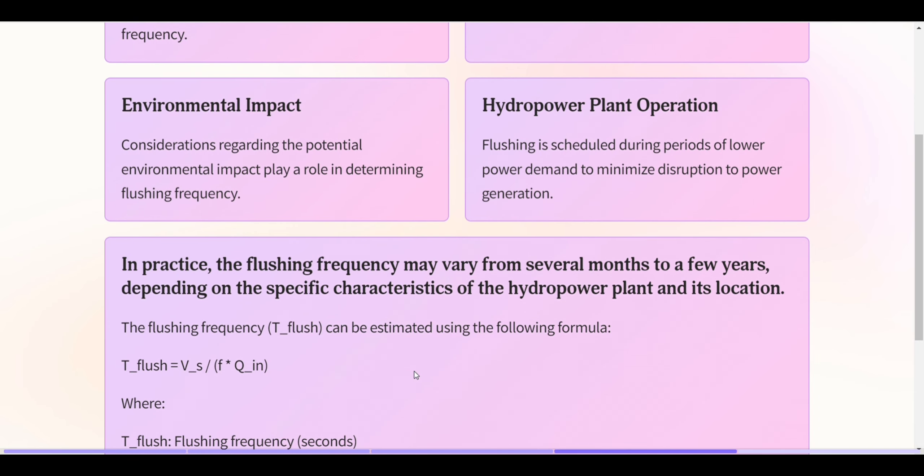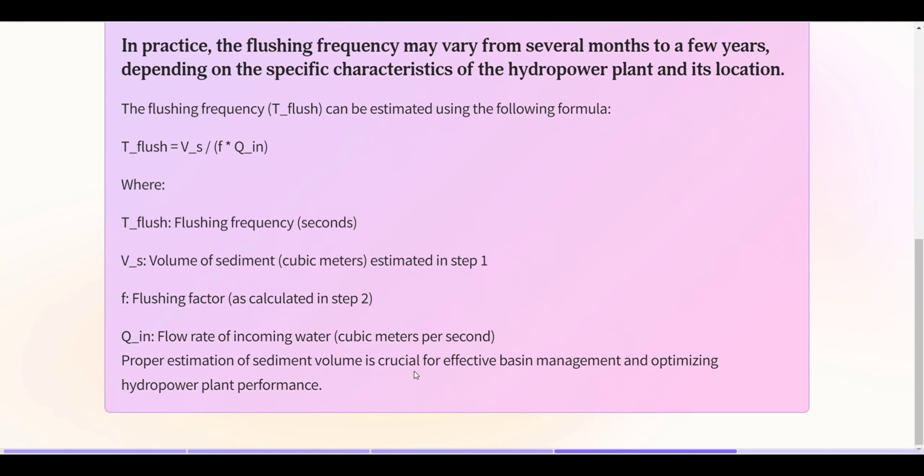In practice, the flushing frequency may vary from several months to a few years, depending on the specific characteristics of the hydropower plant and its location. The flushing frequency can be estimated using the following formula, where T_flush is flushing frequency, V_S is volume of sediment estimated in Step 1, F is flushing factor, and Q_in is flow rate of incoming water.